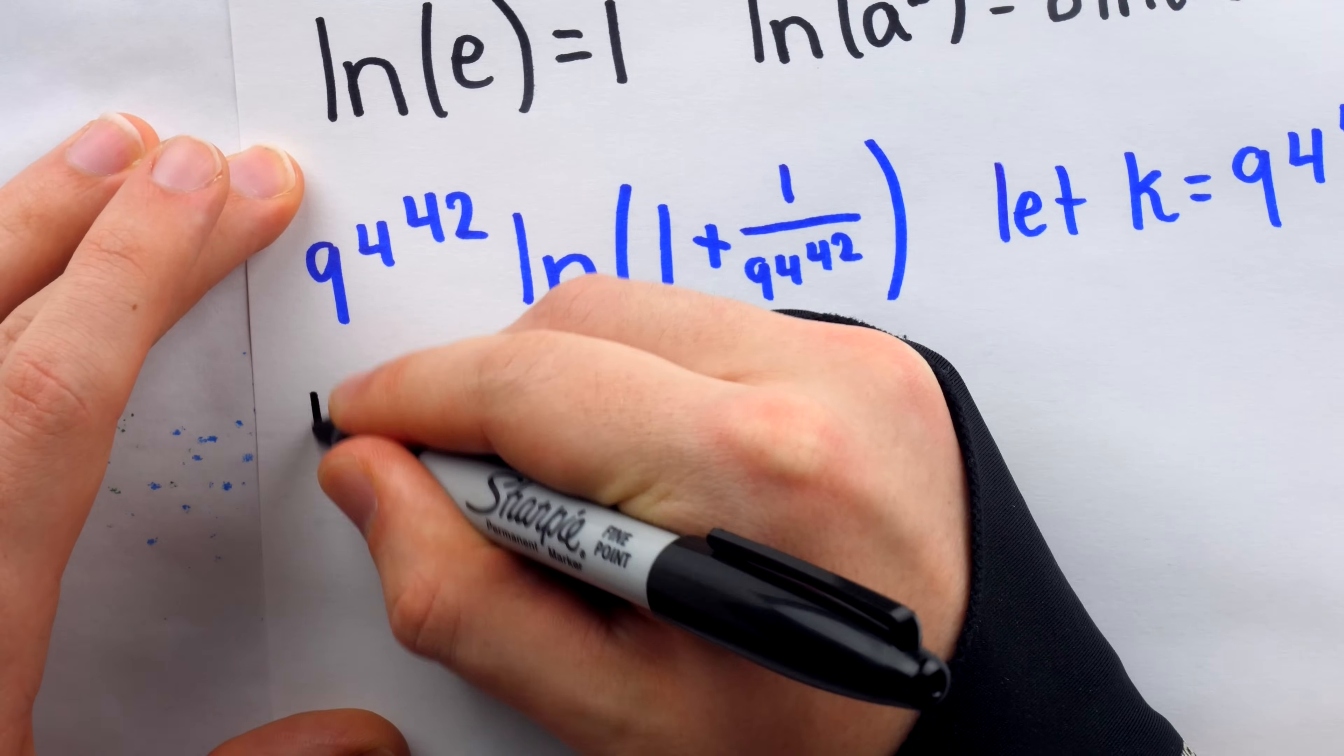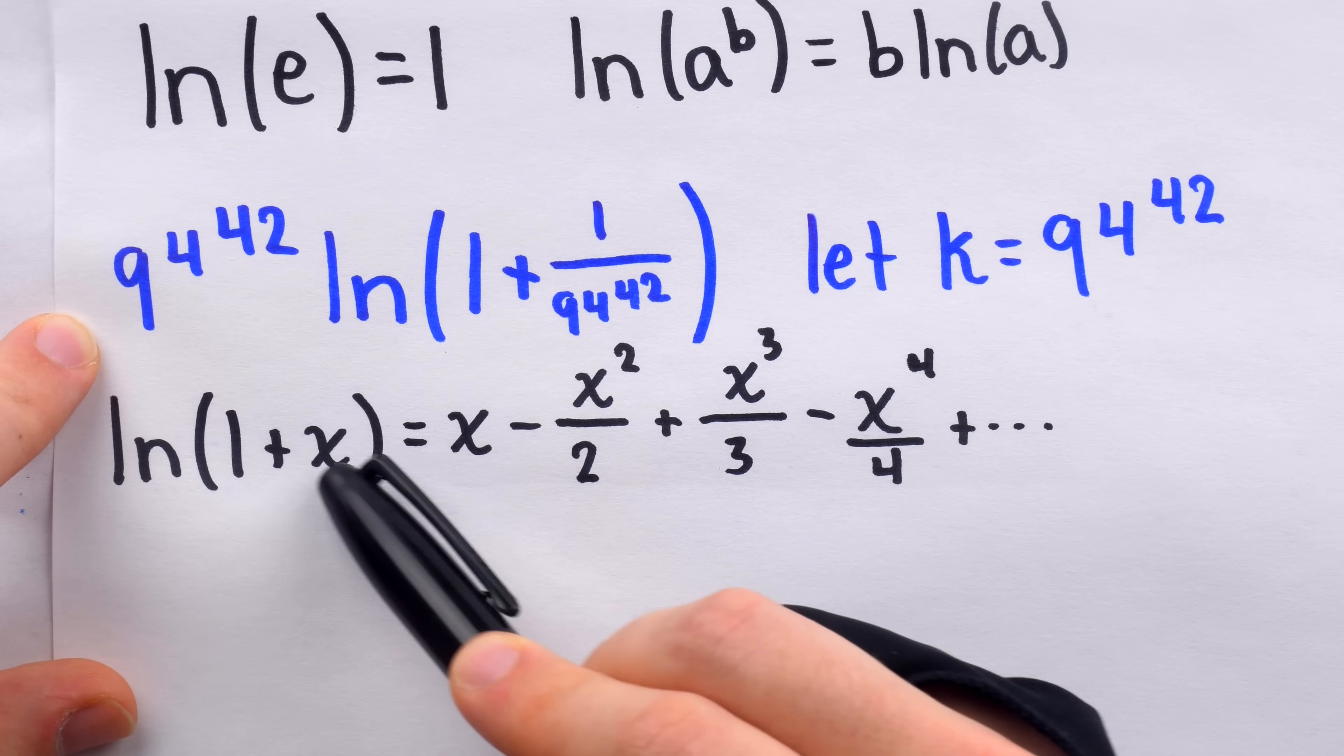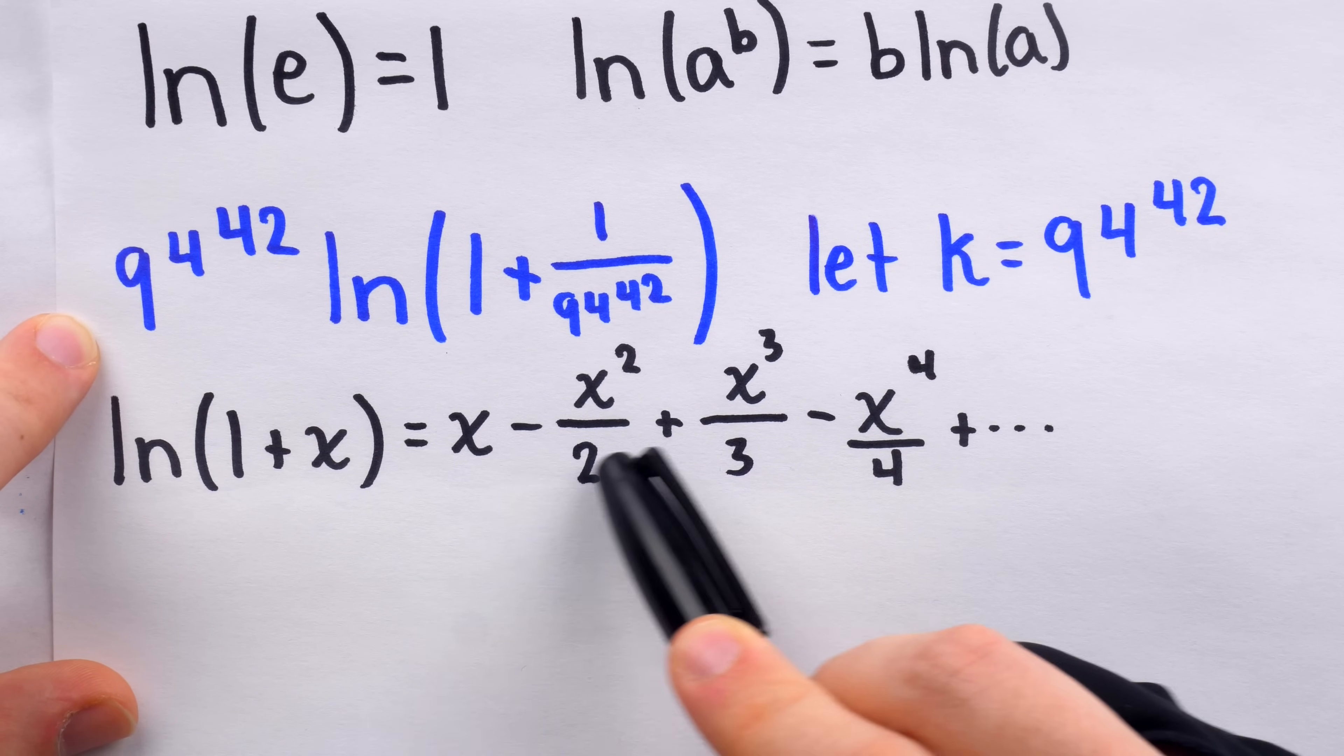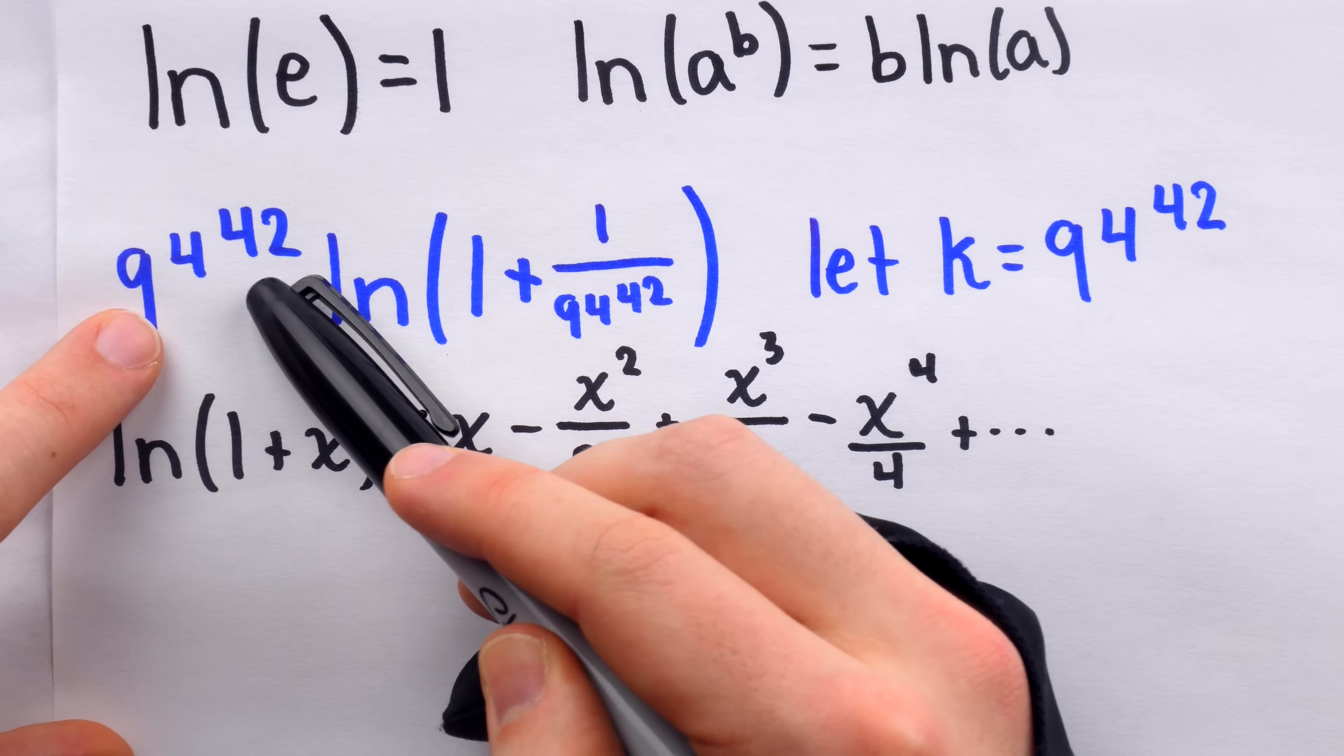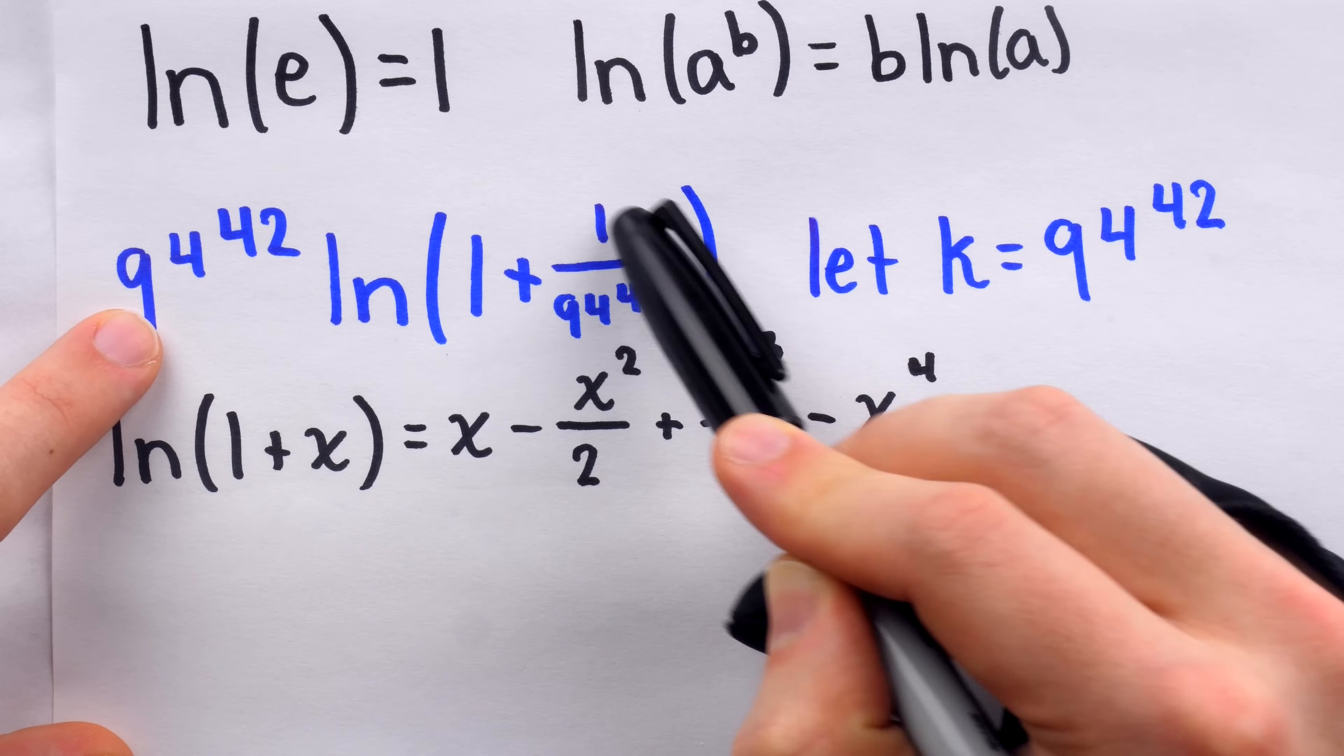Well, if you know your calculus, you might think to consider the power series for the natural log of 1 plus x. Indeed, for any value of x between negative 1 and positive 1, the natural log of 1 plus x is equal to this infinite sum called a power series, because each of its terms are powers of x. In our case, we have this power that we brought out as a factor and then the natural log of 1 plus this number, which is definitely between negative 1 and positive 1.